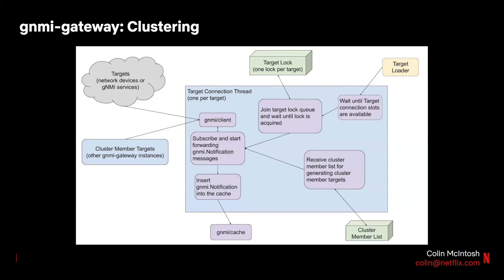This is a short overview of how the clustering works within the connection manager thread. Target connection metadata is received from a target loader in the upper right-hand corner, and that starts the process of GNMI Gateway acquiring the lock for a target. Once a lock is acquired, a connection to a GNMI target is formed and messages are forwarded to the GNMI cache in memory. Additionally, connections are formed to other GNMI Gateway instances to facilitate the replication of received telemetry.